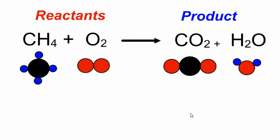Well, let's see. One carbon, one carbon, that's good. Four hydrogens, only two. So I need to add something to this side. I need to add another molecule of water. So I've got one carbon, one carbon, four hydrogen, four hydrogen, two oxygen and four oxygen. That's not good.